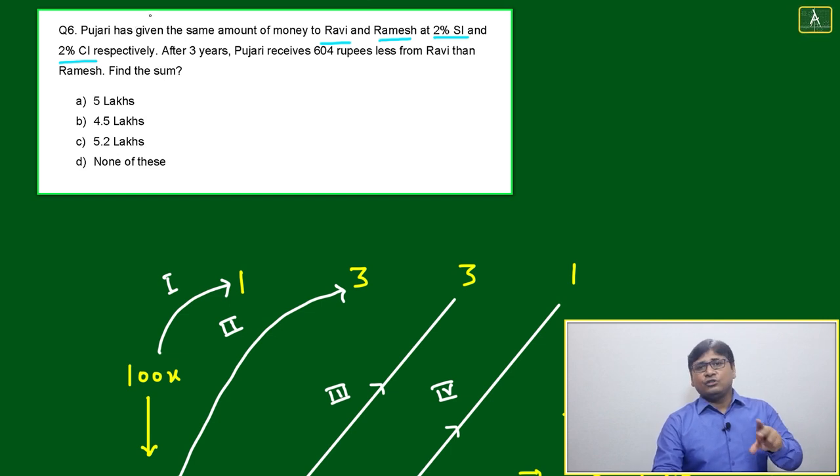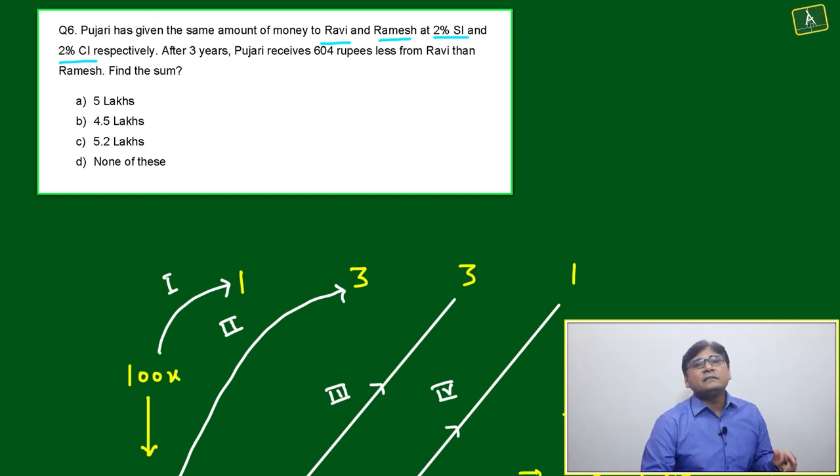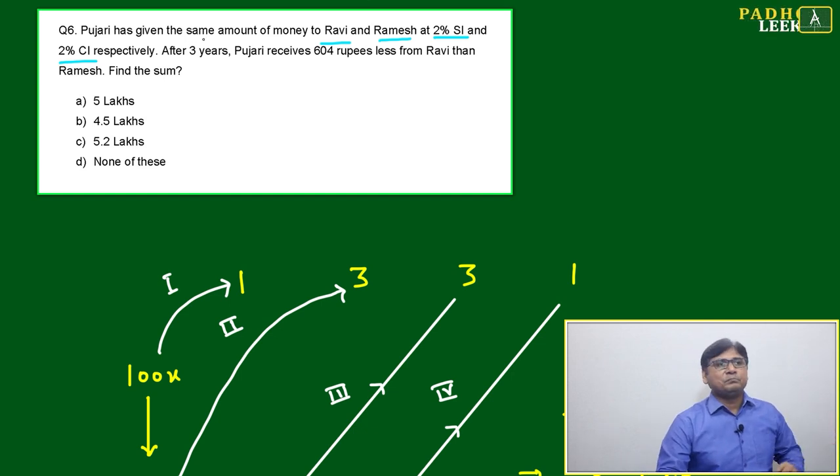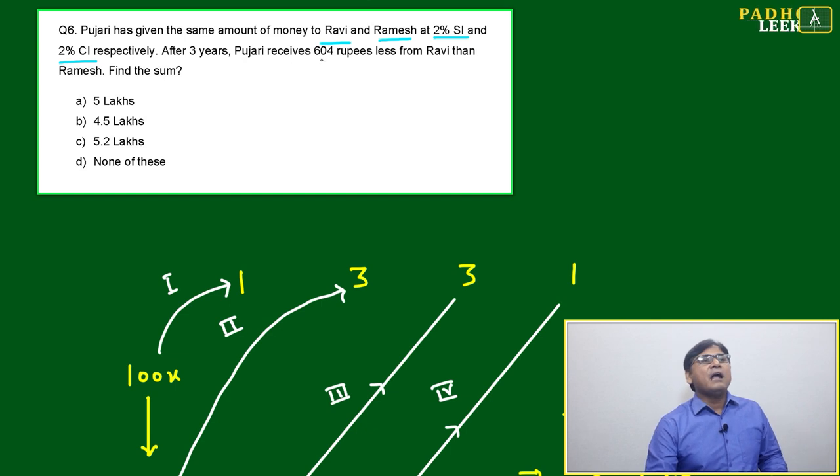The rate of interest is the same under CI and SI. That's one criteria for this type of question. If rates are different, we calculate separately. If the rate is same, we can get the difference based on Pascal's triangle.